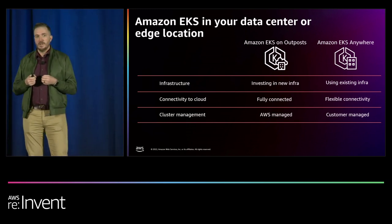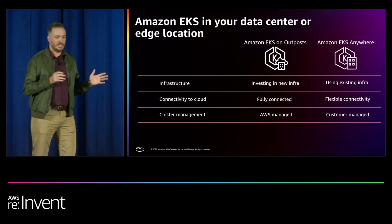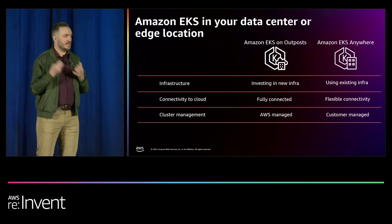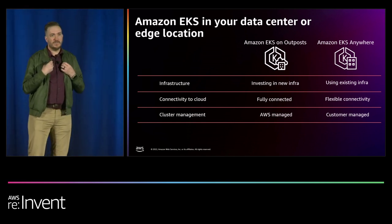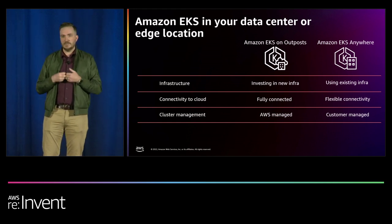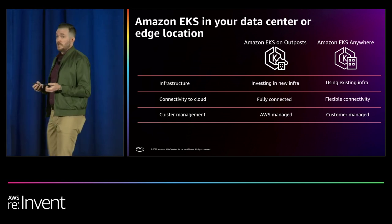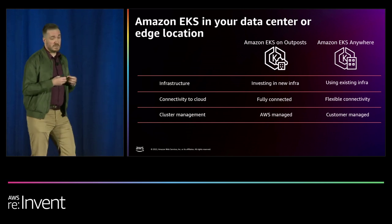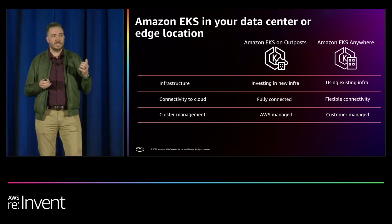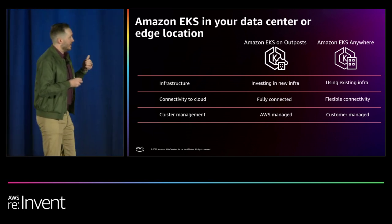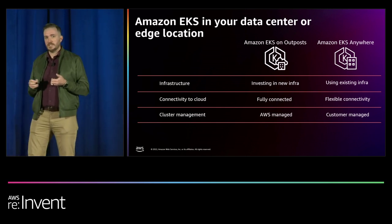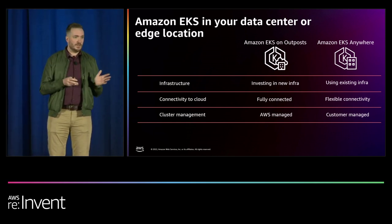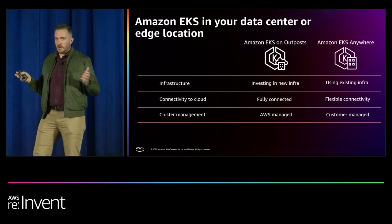There are really two main ways to run Kubernetes out of that whole portfolio in your data center or at the edge, plus Snow devices coming soon. Outpost is our infrastructure — this is when you don't need to amortize infrastructure you've already bought and you're looking to buy new infrastructure. The TCO is actually pretty strong, and it's a really great option if you want to run Kubernetes in the most consistent way possible with the region. It needs to be fully connected, though we do support up to seven days of disconnect. And it's fully AWS managed — we manage the control plane for you, you just attach the worker nodes.